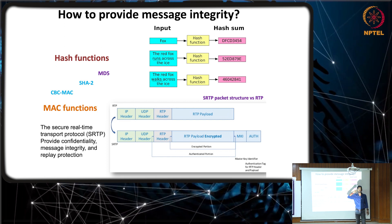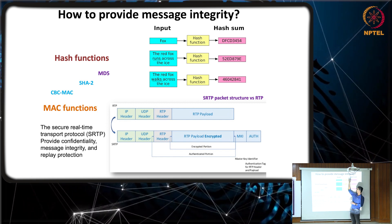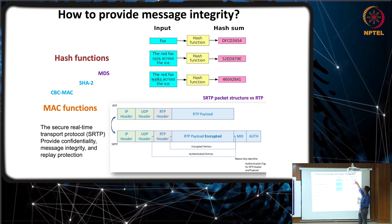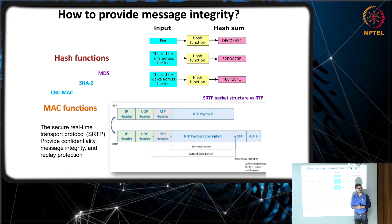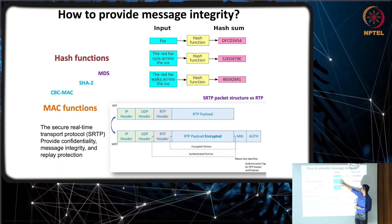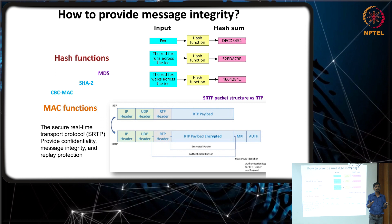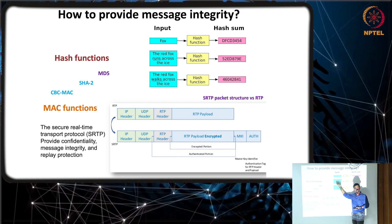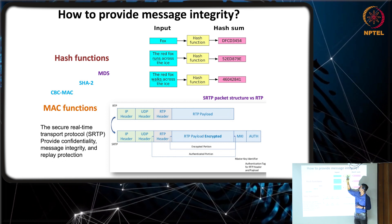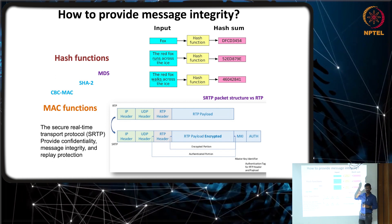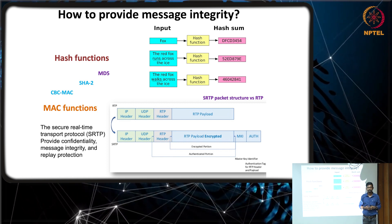The hash function is one-way: you cannot invert it to get the input. Now, the domain of inputs is infinite — you can give any video, any audio of any size — but the output is only 2 raised to 32 possible values for 32 bits. Obviously, many inputs will map to the same output. There are hundreds and thousands of inputs that would give the same output, but the problem is finding even one of them is computationally difficult. That word is very important — computationally difficult.